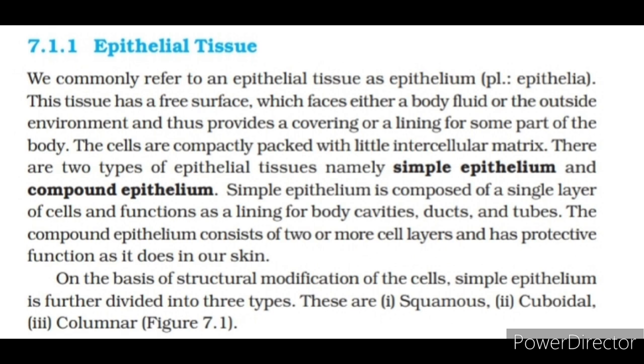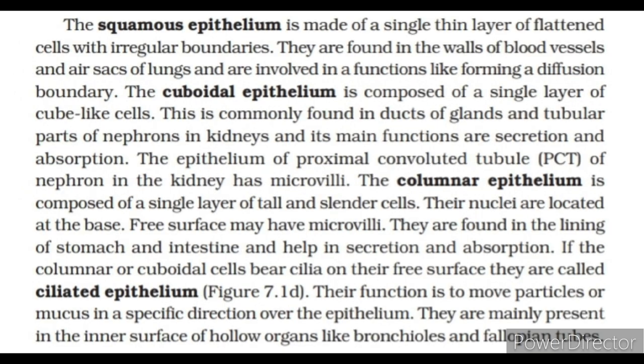On the basis of structural modification of the cells, simple epithelium is further divided into three types: squamous, cuboidal and columnar. The squamous epithelium is made of a single thin layer of flattened cells with irregular boundaries. They are found in the walls of blood vessels and air sacs of lungs and are involved in functions like forming a diffusion boundary.